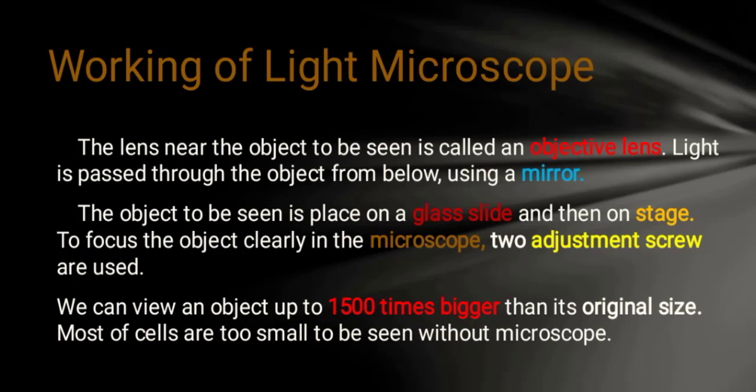The object to be seen is placed on a glass slide. The object is placed on the stage, then the objective lens focuses on the object on the stage slide. We can view an object up to 1500 times bigger using this instrument.